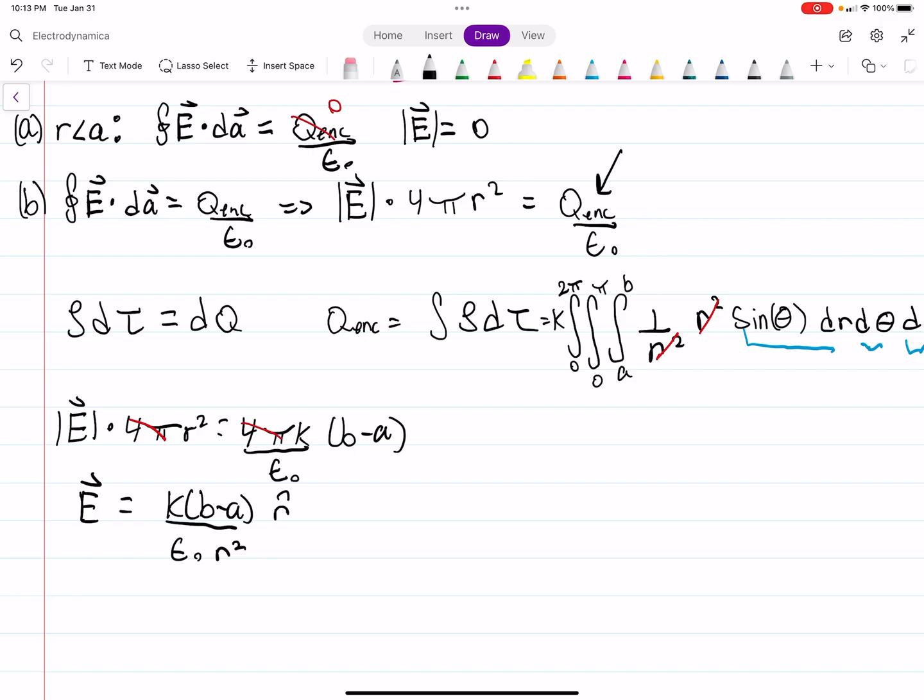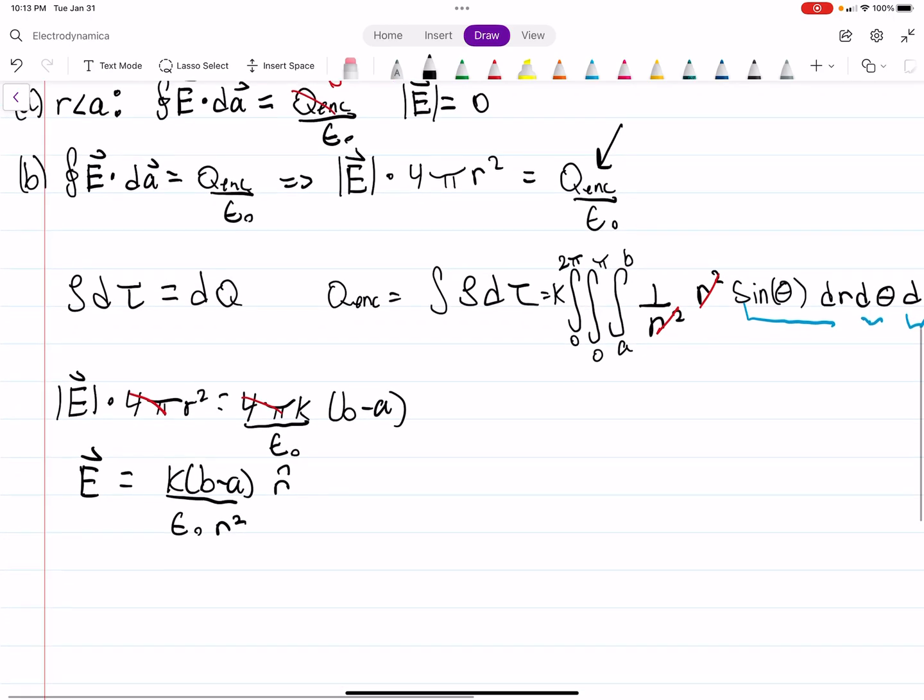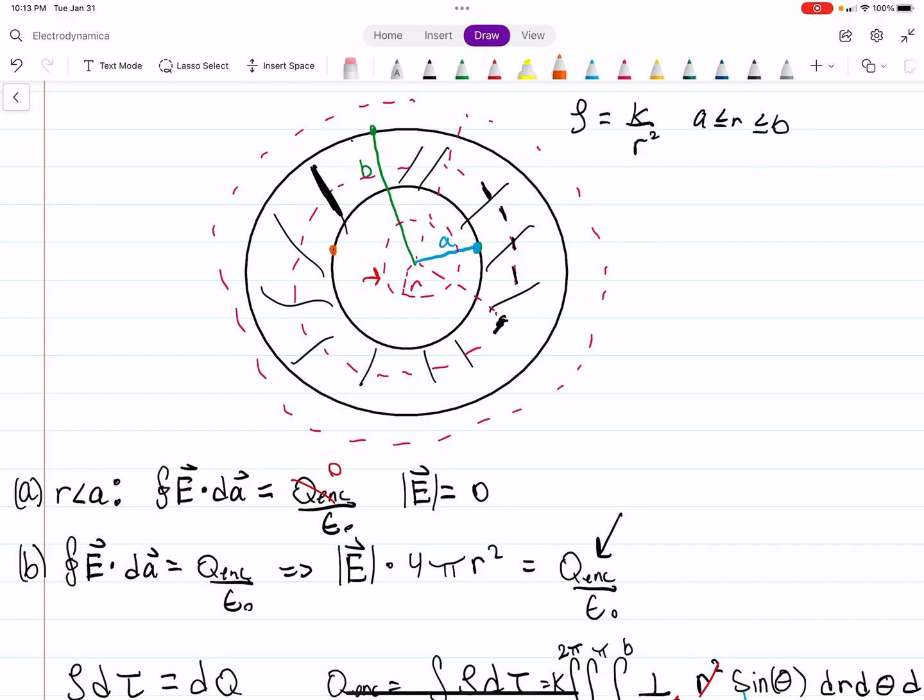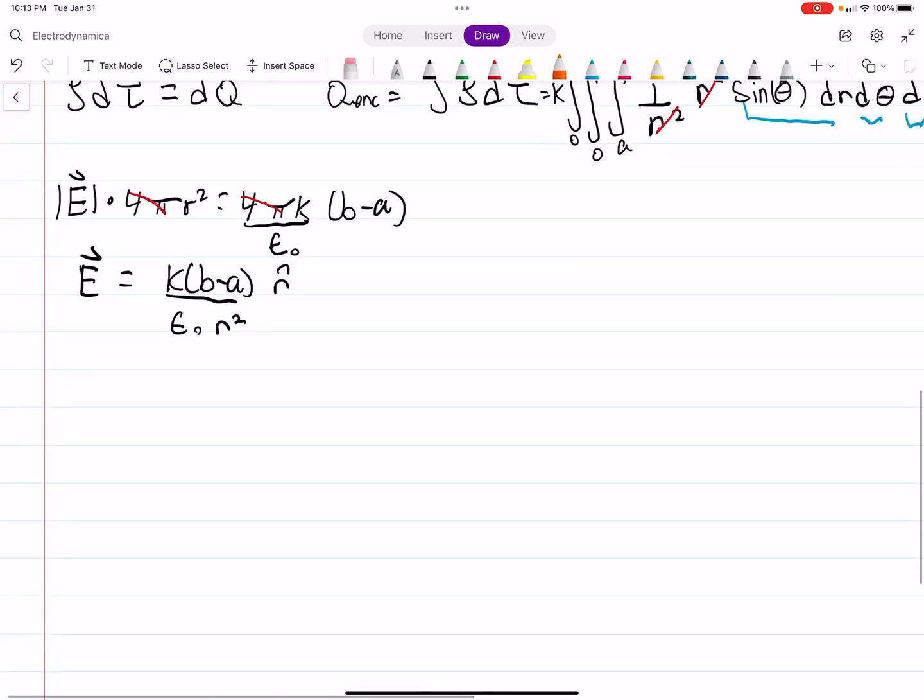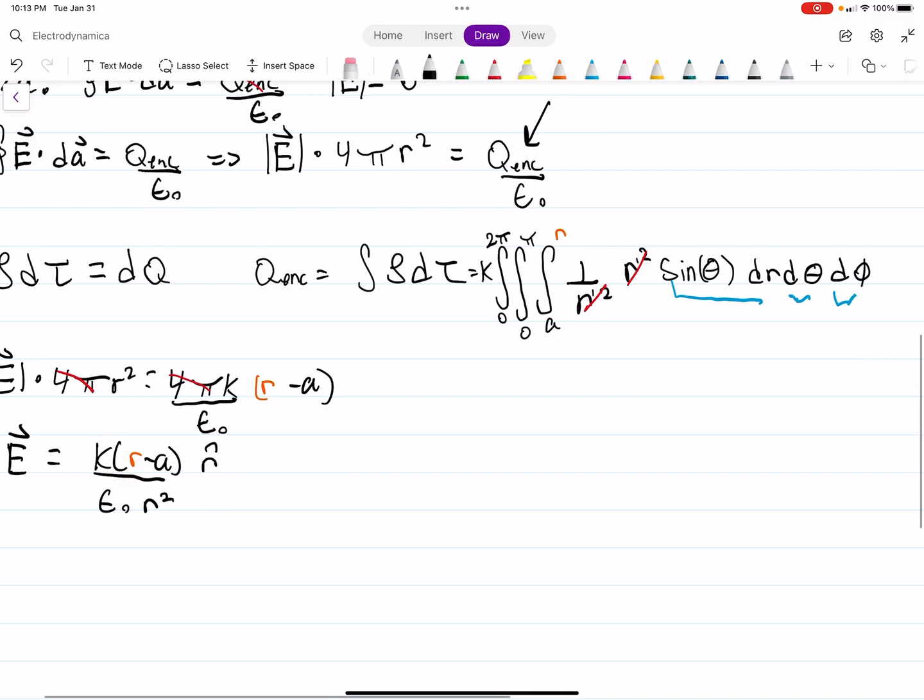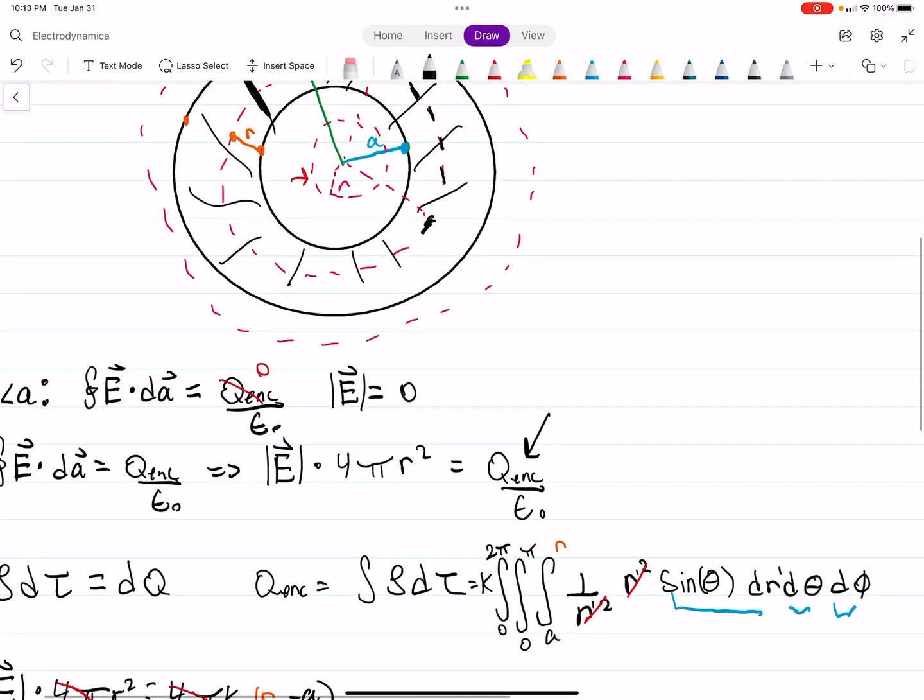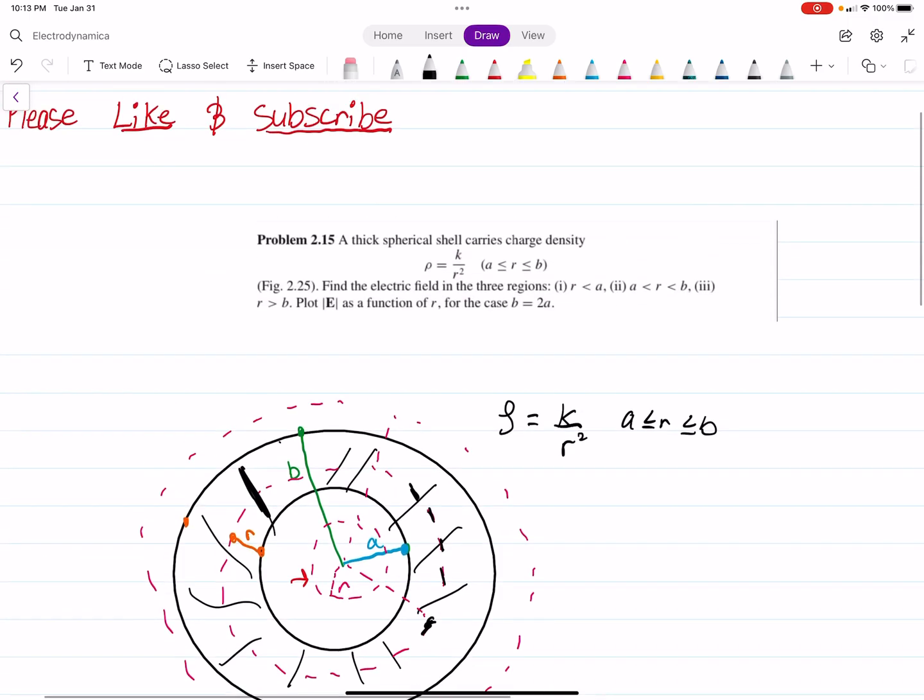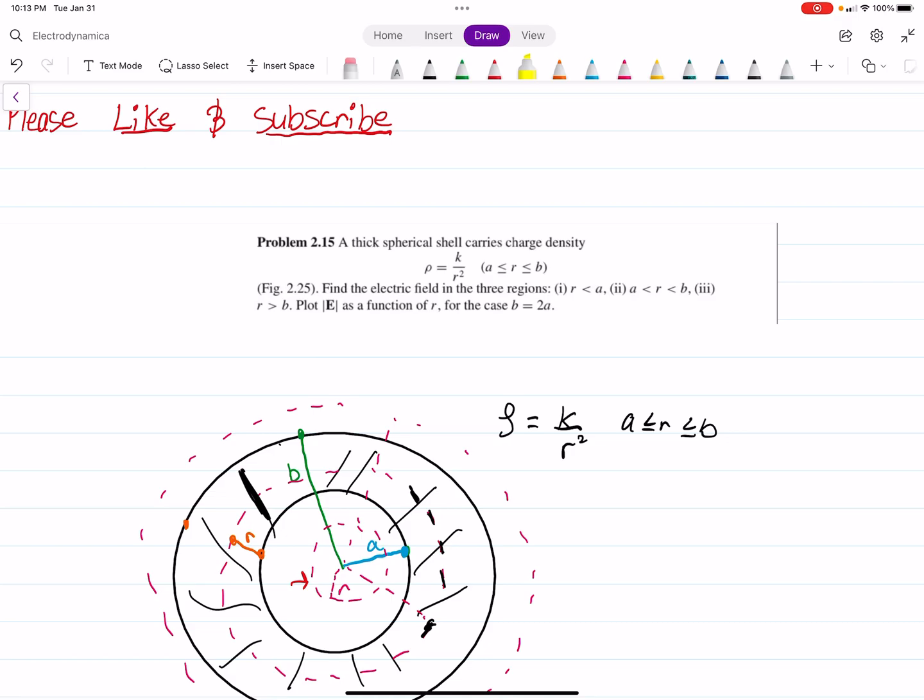And then your E field is equal to K times B minus A divided by epsilon naught R squared in the R hat direction. And I just realized, because I'm thinking about the next part of the problem, we're not actually integrating from A to B. We need to integrate from A to some part R. So the only thing that changes there is this should actually be R, this should be R, and this should be R. So if you wanted to be technical, these are dummy variables then. But hopefully that makes sense. So we're just integrating from some part right here. It's just something greater than A, but less than B.